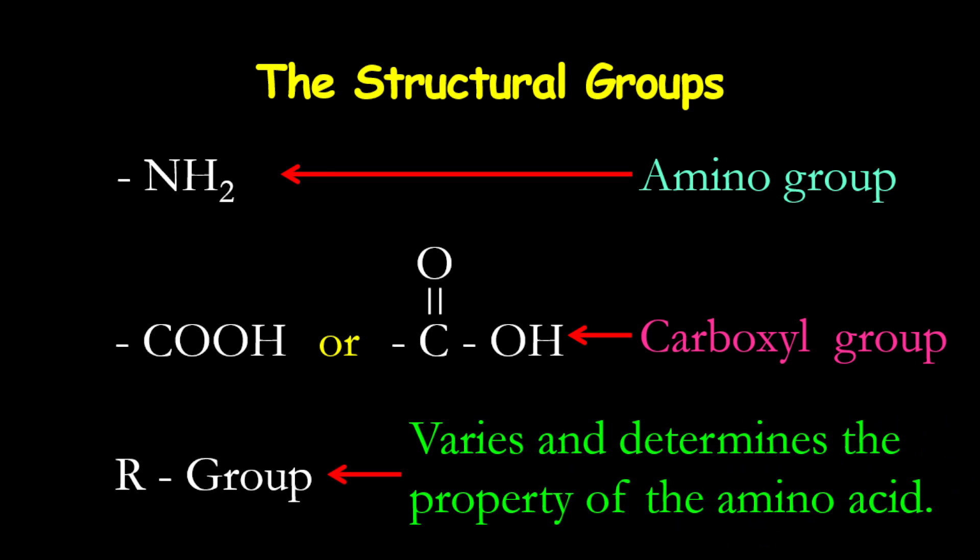Now we have the R group. The R group varies and also determines the property of the amino acid. The R group is the only thing that is different between any given amino acid. All amino acids must contain one amino group and one carboxyl group — the only difference between any given amino acid is the R group, and there are different properties based upon the R group.